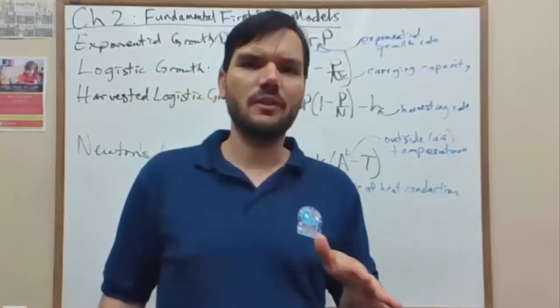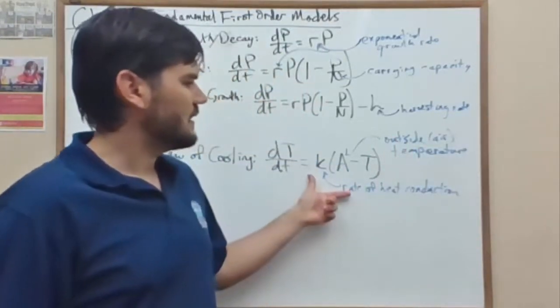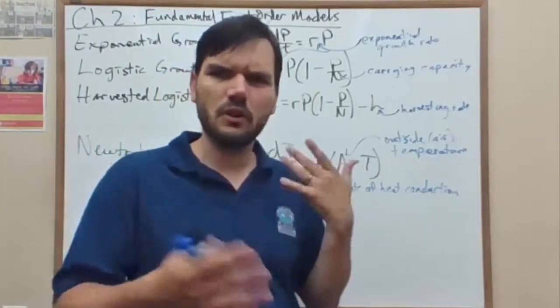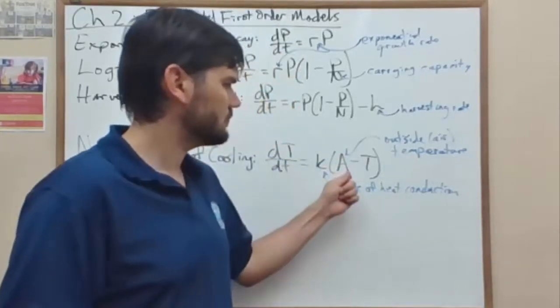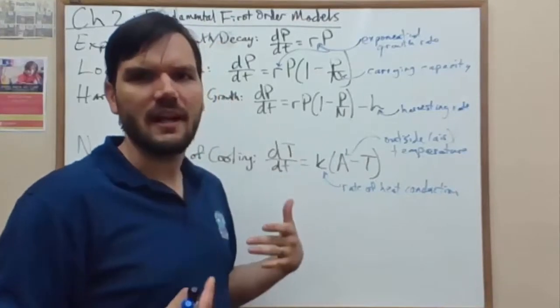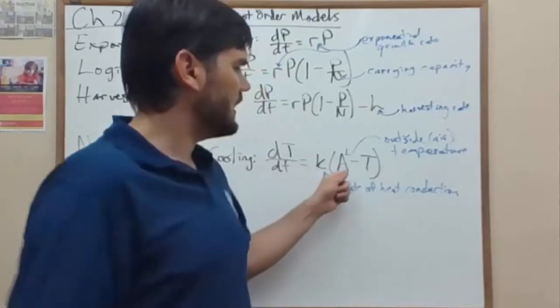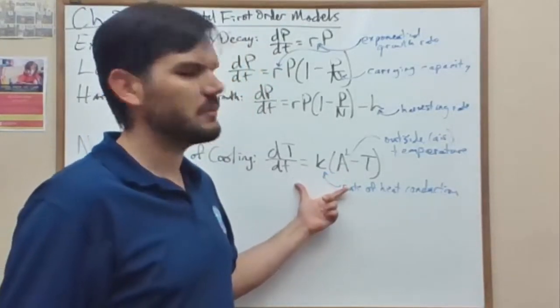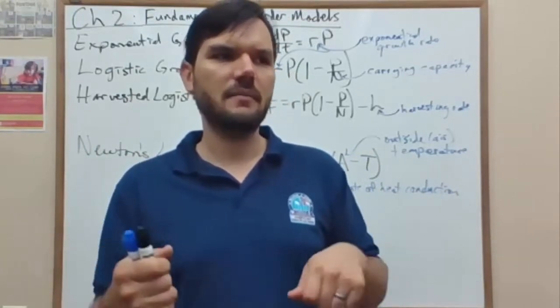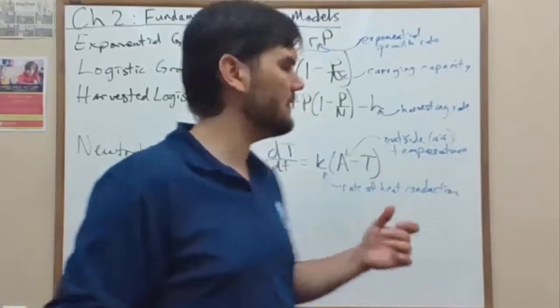And sometimes you'll see this model used with a tongue-in-cheek style to represent the cooling of a dead body to try to figure out in a murder mystery style when the person actually died based upon the time when the body is found. So oftentimes we play some games in not just solving this equation, but also playing around with finding times in the past when things happen, not just in the future.